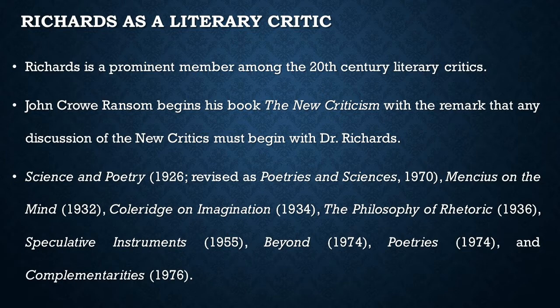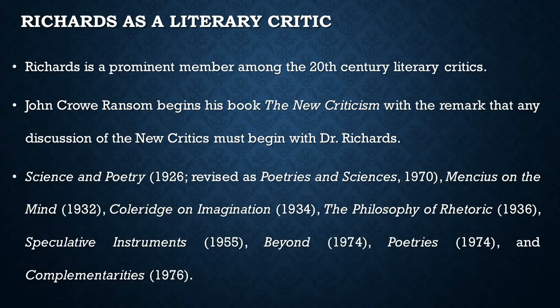His speculative and theoretical works include Science and Poetry, which was later revised as Poetry and Sciences, Mencius on the Mind, Coleridge on Imagination, The Philosophy of Rhetoric, Speculative Instruments, Beyond, and Poetry and Complementarities.